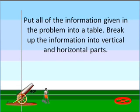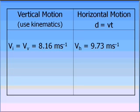The next step is to take this information and put it into a table. What we want to do is look at the information given in the problem and break it up into its horizontal and vertical parts. We do this by constructing a table. You can see here that I have my vertical motion, which is using the kinematic formulas, and on the right hand side, I have my horizontal motion, which is using the very basic formula d equals v times t.